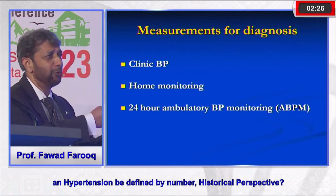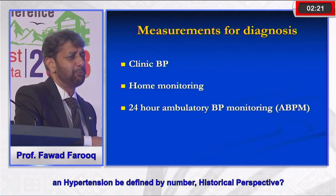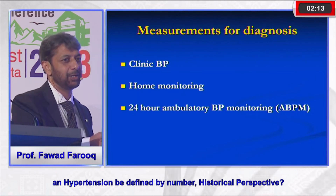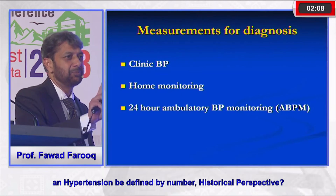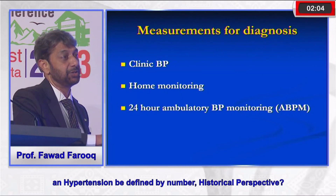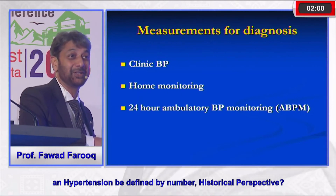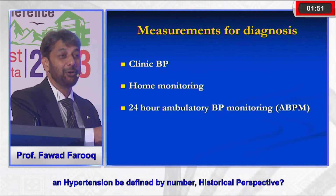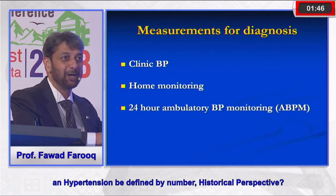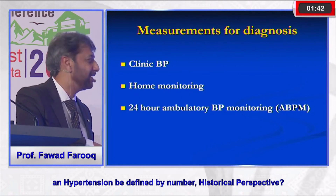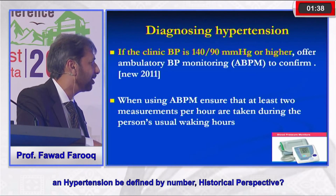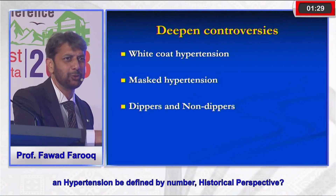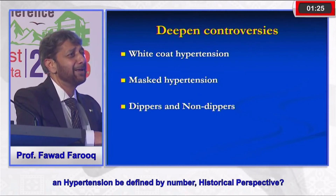Blood pressure measurement technique is critically important. The same patient can have different blood pressure readings depending on instrument and technique. Where you measure — clinic, home, or 24-hour ambulatory monitoring — also matters significantly. There is considerable variability in the same person's readings across these settings, giving rise to phenomena like white coat hypertension, masked hypertension, dipper, and non-dipper patterns.